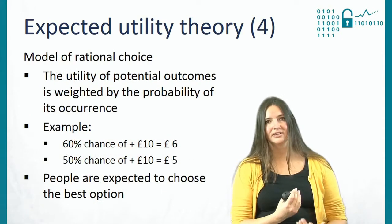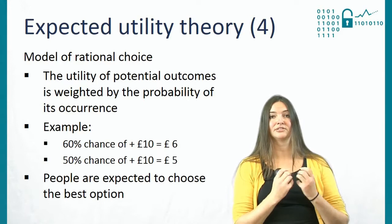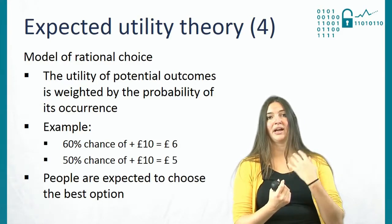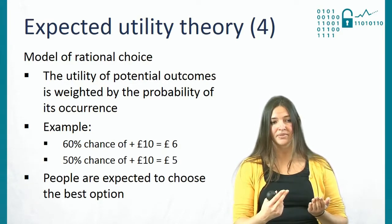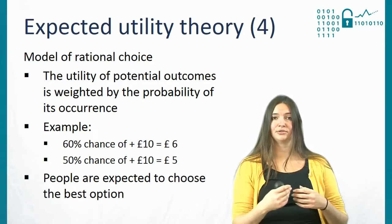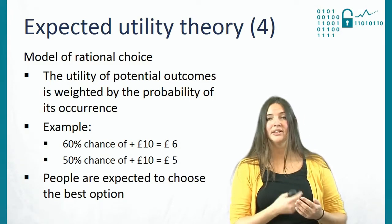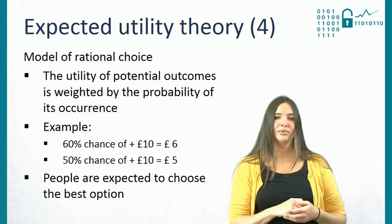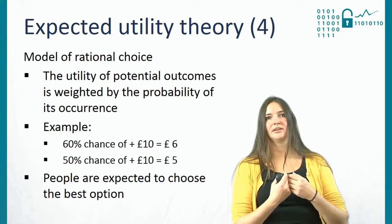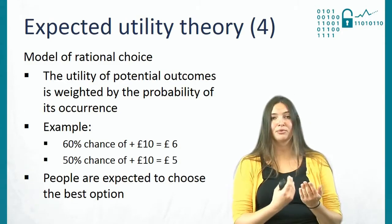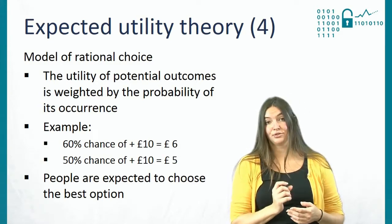All this together means that the expected utility theory is a model of rational choice — it's based on the idea that people act rationally. You take the wealth people have to start off with, look at the different options and the probability of those options occurring, calculate the possible outcome, and choose the best option. For example, if you have a 60% chance of winning 10 pounds, the expected value is 6 pounds; a 50% chance gives 5 pounds. So people rationally will choose the 6-pound option, because winning more is better.